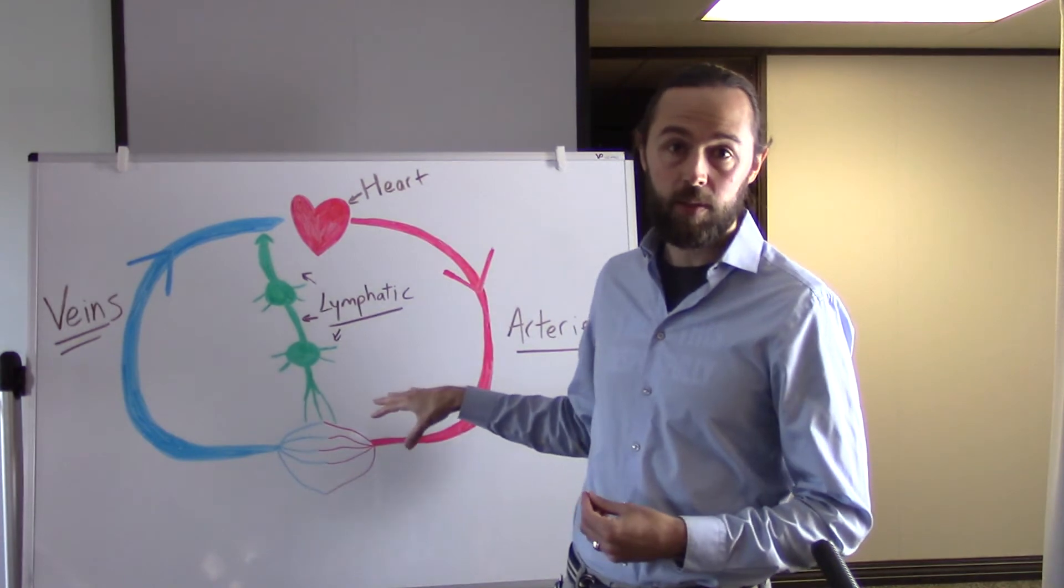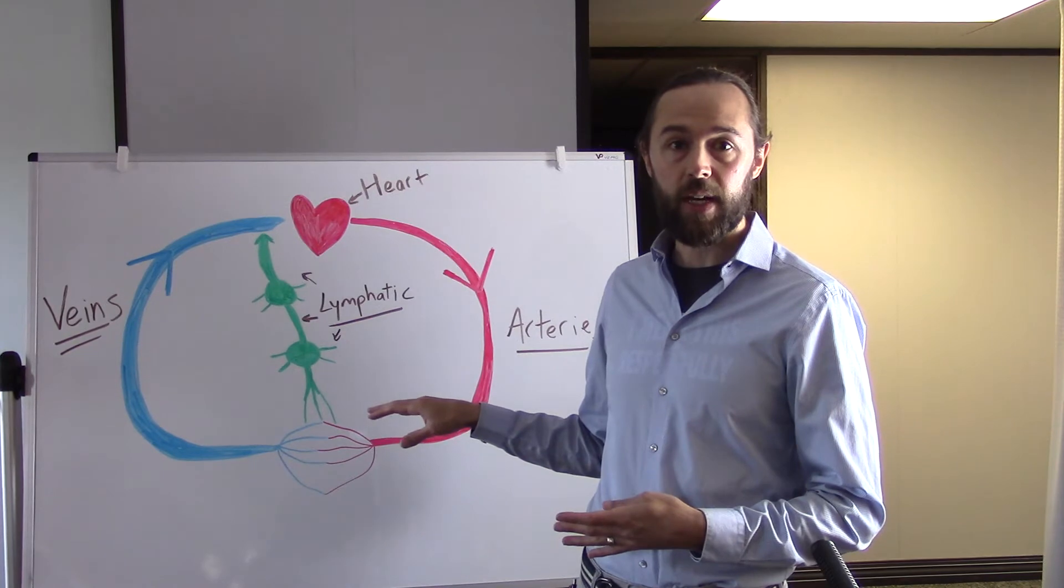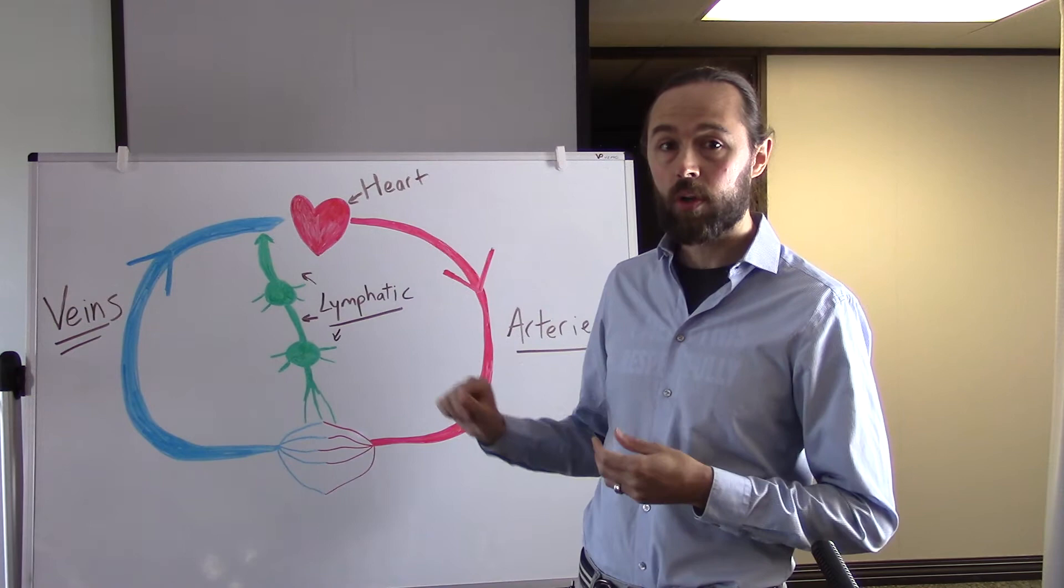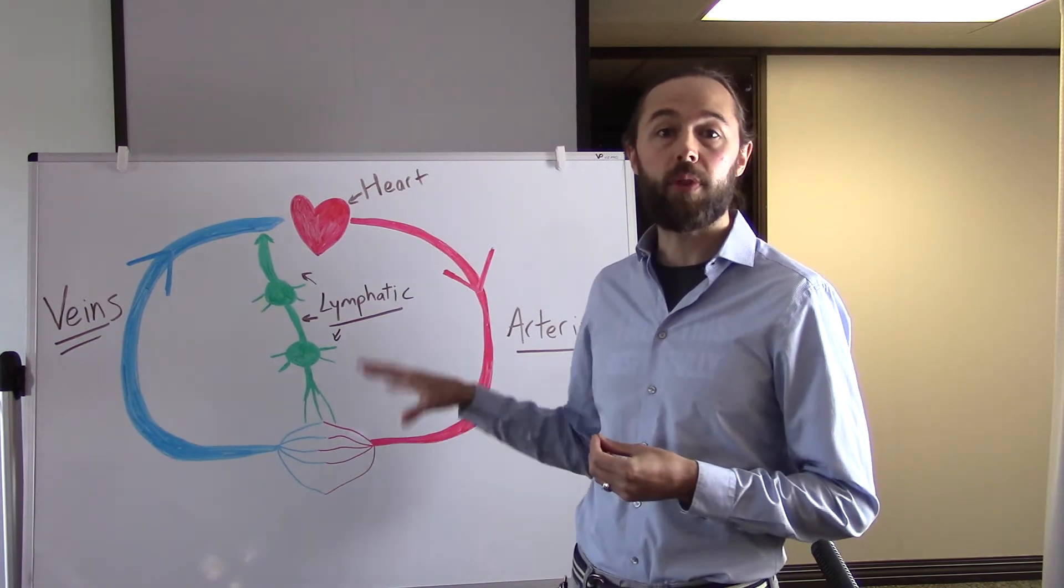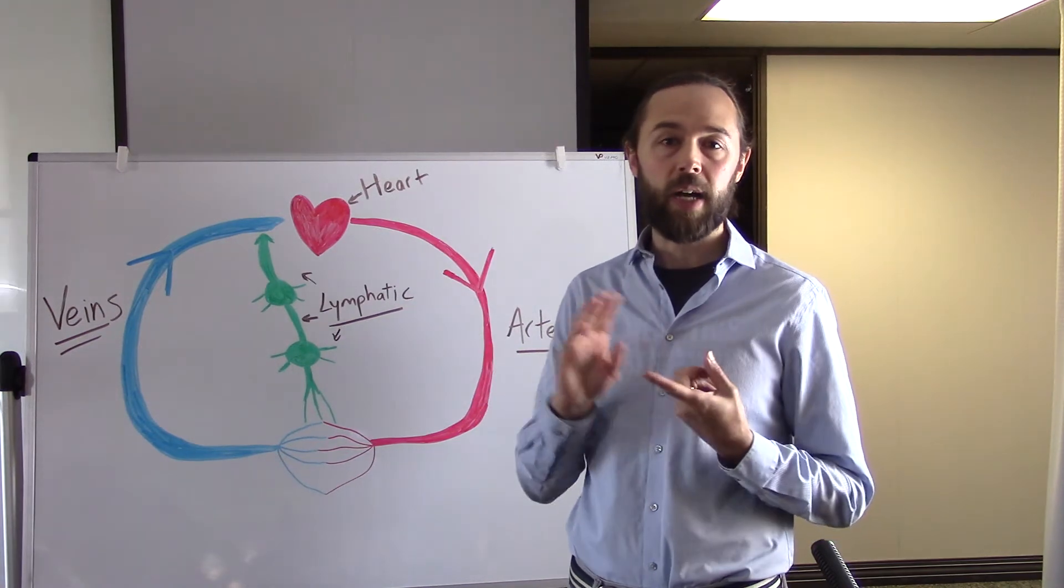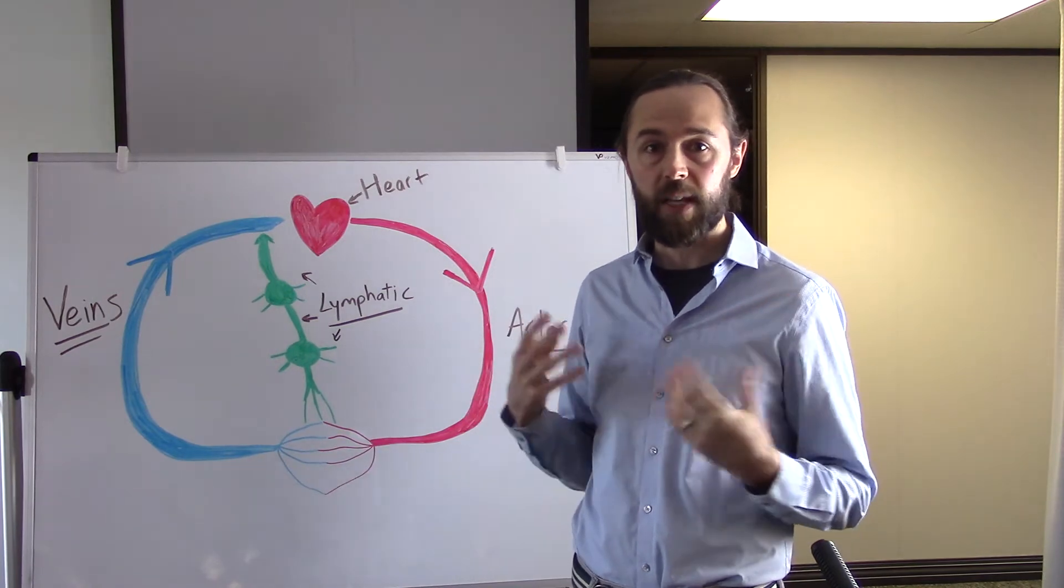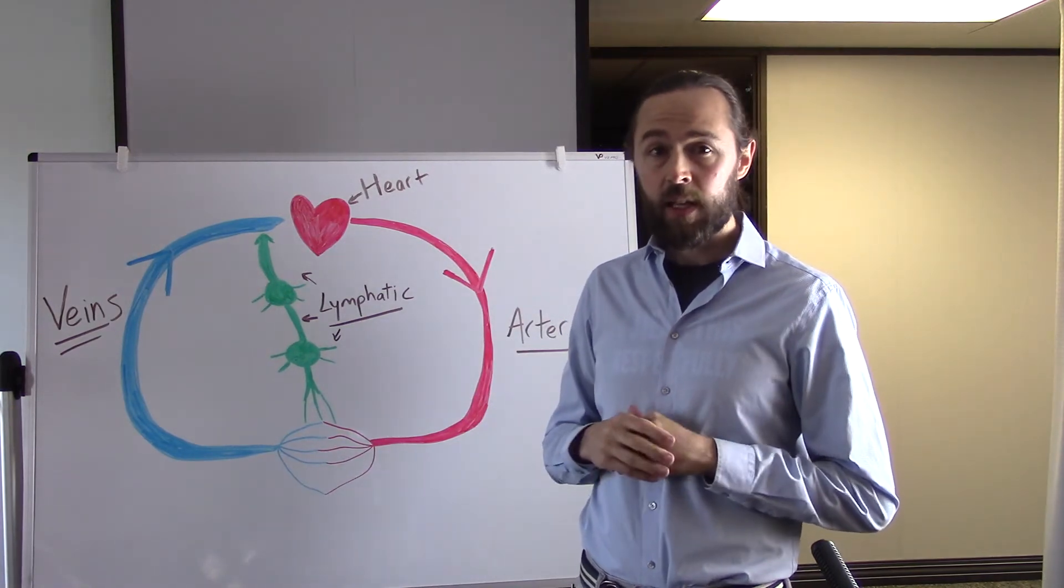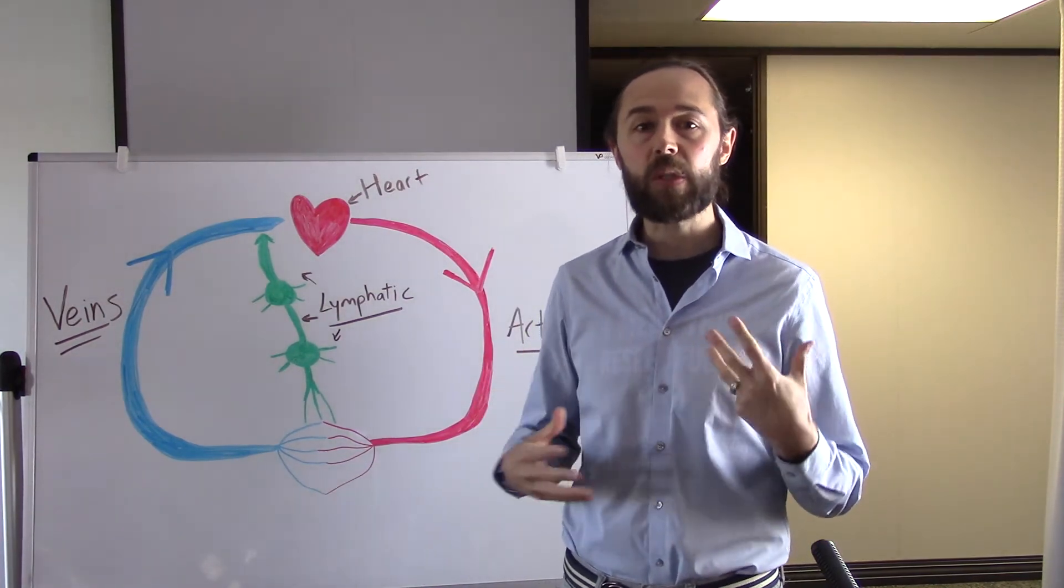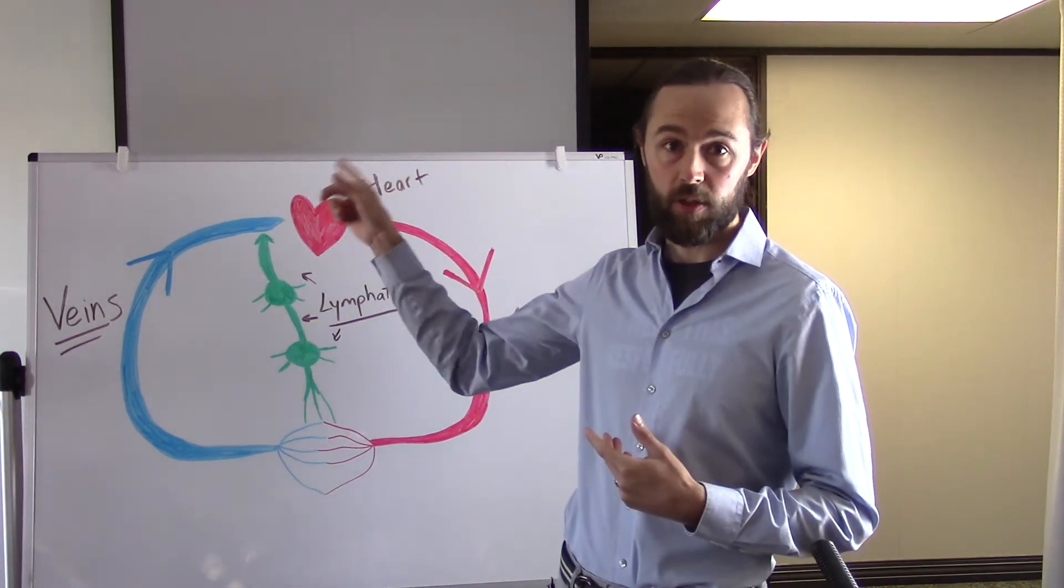So going back a step, why do we have a lymphatic system? What's the function of it? There's several key functions. I like to think of it as a really important part of your immune system because as the lymph fluid is moving through the network of vessels and lymph nodes, it's exposing certain toxins and foreign substances to your white blood cells. So that's helping your immune system stay up to date and fight off infections. The other nice way to look at the lymphatic system in an oversimplified way is that it's kind of like a recycle system. It's cleansing certain things out of your blood before it returns it back into the blood supply.